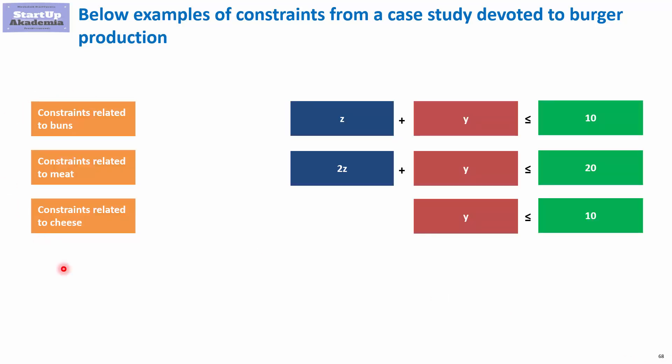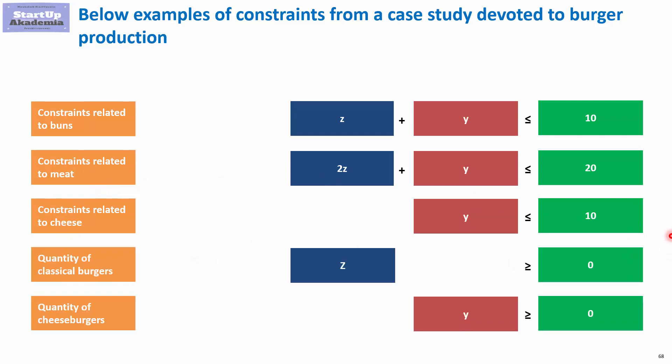Below we have examples of constraints from the previous case study devoted to burger production. We had three constraints that described our situation with the resources we had: the limited number of buns, the meat, and the cheese. We also had two additional constraints on the quantity of classical burgers, where we wanted not to have negative values.